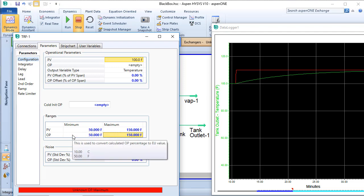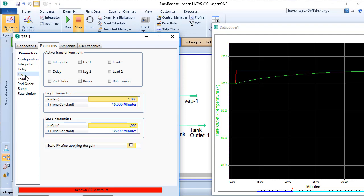Click on the Lag tab and select the Lag 1 checkbox. We want a gain of 1 and a time constant of 10 minutes, so we can leave the defaults.